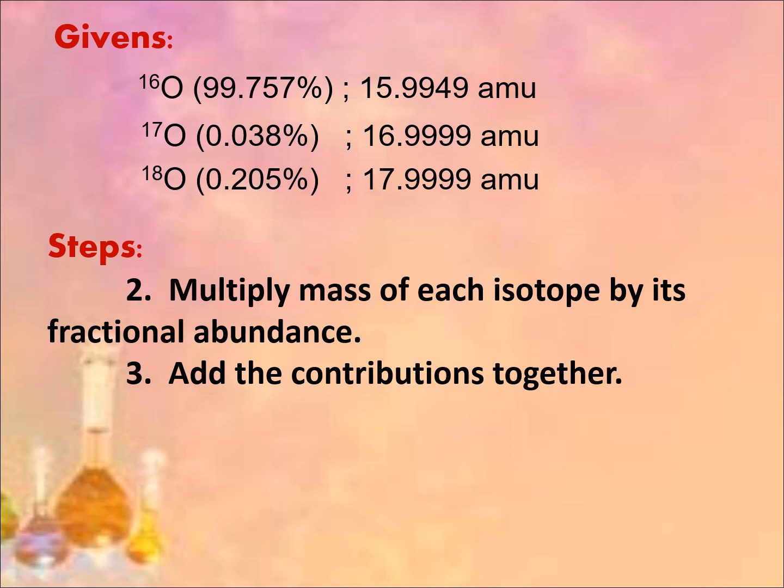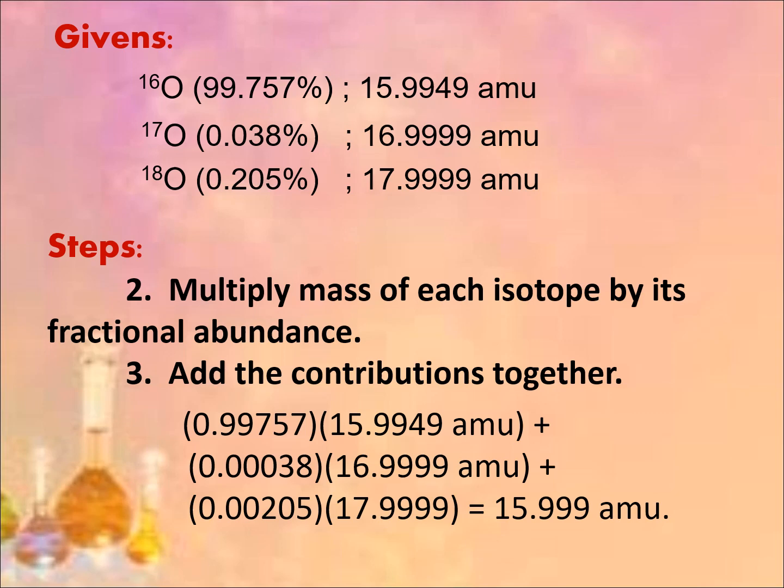Next, we multiply the mass of each isotope by its fractional abundance, then add the contributions together. So we have: (0.99757 × 15.99) + (0.00038 × 16.99) + (0.00205 × 17.99). The answer is 15.999 atomic mass units. So 15.999 amu is your average atomic mass of oxygen.